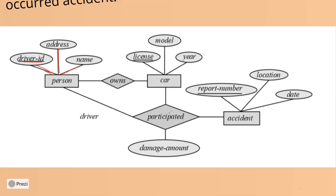The common relationship is called 'Participated.' When you participated, you have a particular amount — the damage amount — which is also mentioned. Damage amount is shared between the person, the car, and the accident.